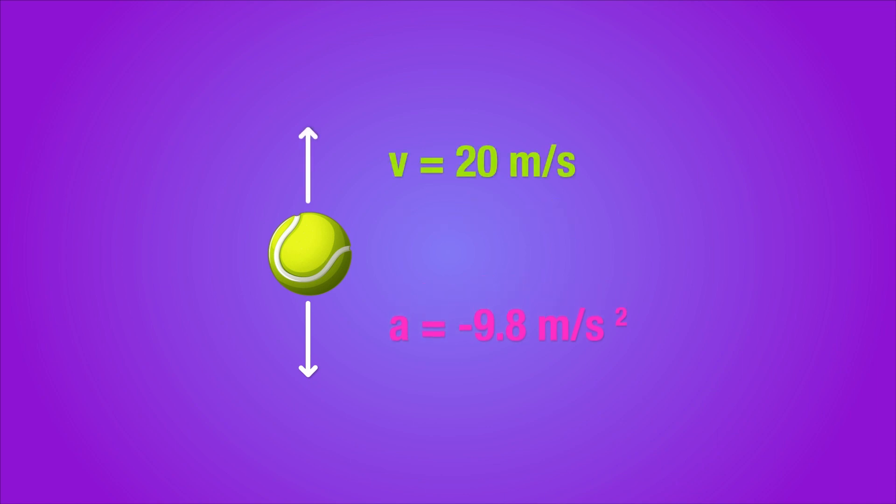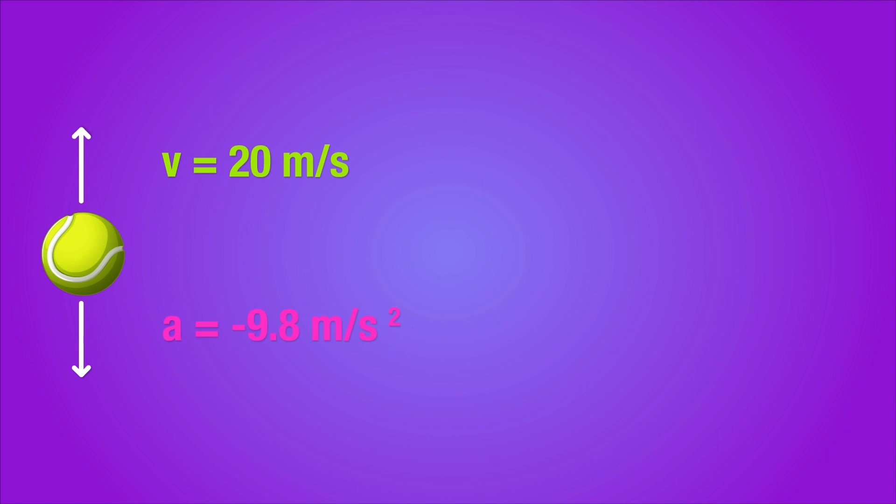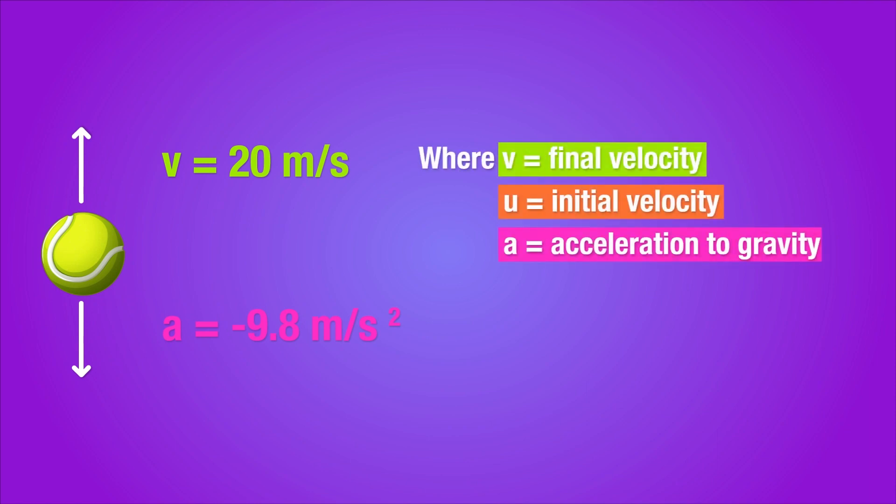We can also safely assume that the ball will be momentarily stationary at its highest point as it turns around and begins to fall back down. What this means is that we can determine the displacement of the ball as it goes from its initial velocity of 20 meters per second to its final velocity at its highest point. To do this, we can use the displacement formula we came up with in the last session. That is 2As is equal to v square minus u square.